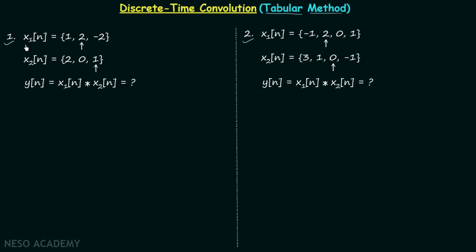In the first example we have two discrete time signals x1n and x2n. Signal x1n has the values 1, 2, minus 2, where 2 is the value when n equals 0. Signal x2n has the values 2, 0, 1, where 1 is the value when n equals 0. We are required to find the discrete time signal yn obtained by convolving x1n and x2n.